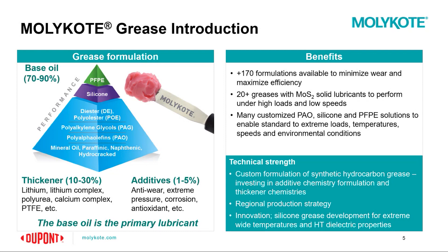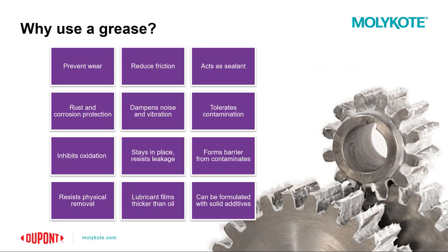Mollie Coat actually has over 170 different formulations for greases alone, so it can get really complex and overwhelming at times. Why use a grease? Well, beyond the basic lubricant functions, greases can act as a sealant, prevent rust and corrosion, dampen noise, improve the feel of knobs and buttons in vehicles, tolerate different contaminations, inhibit oxidation, resist leakage, form a barrier against contamination, and resist physical removal — among many other uses.